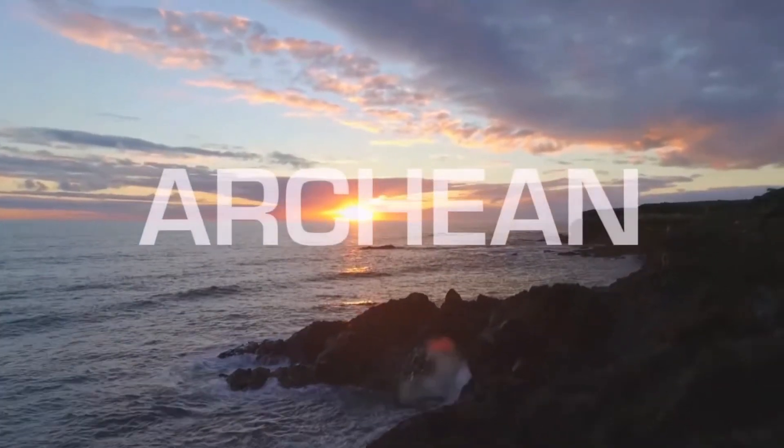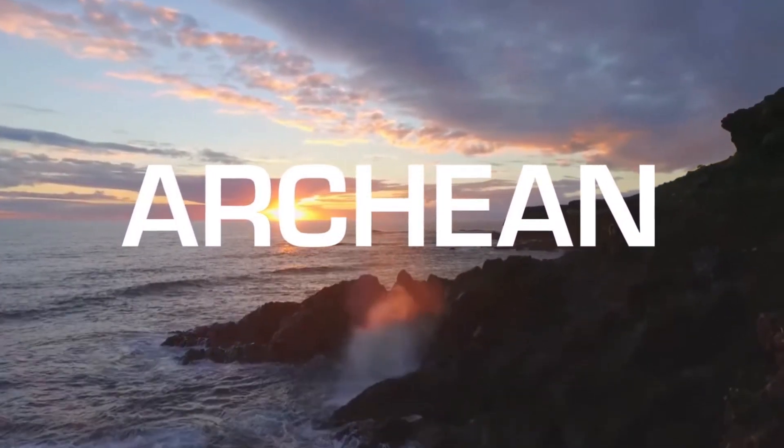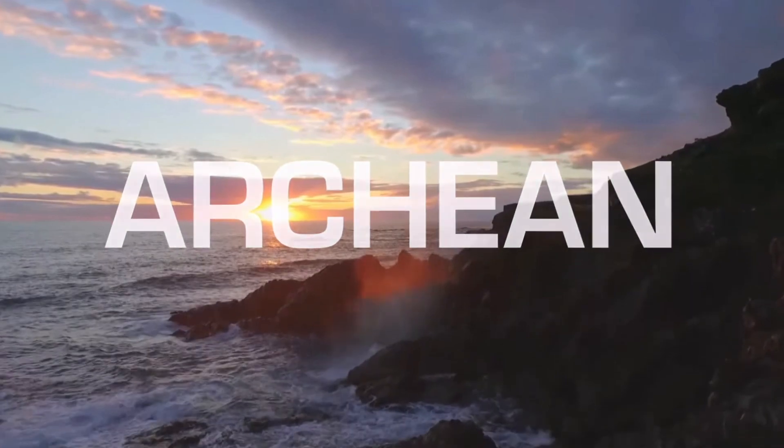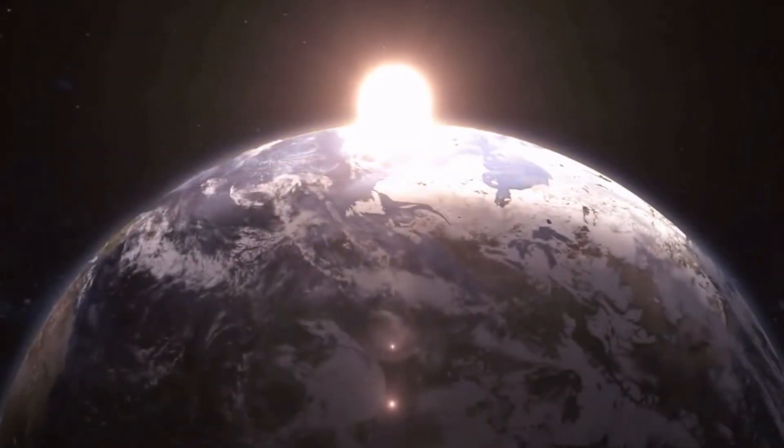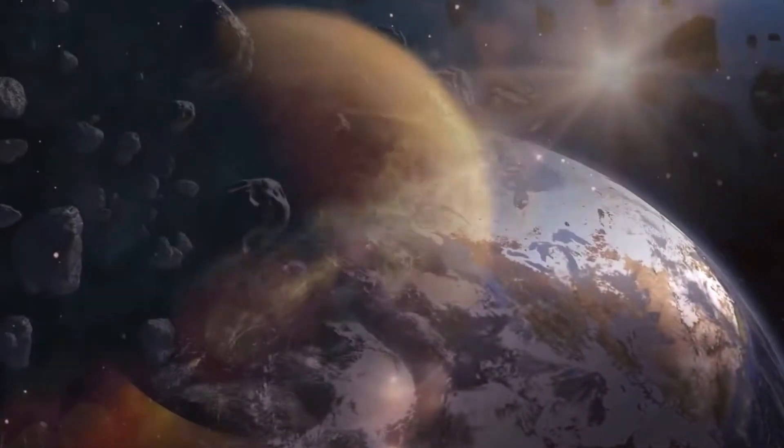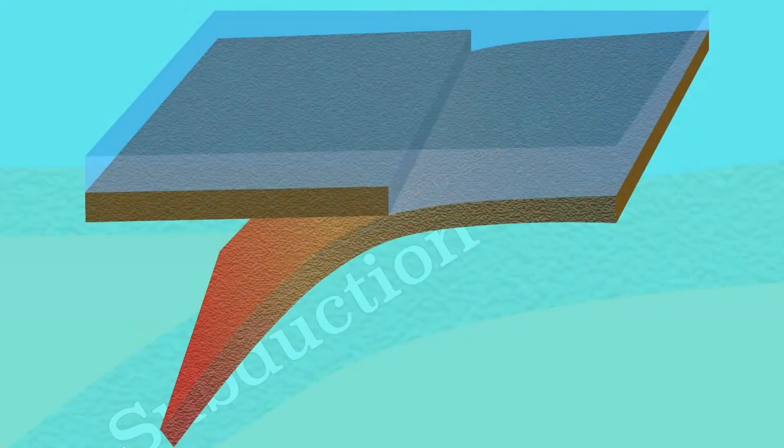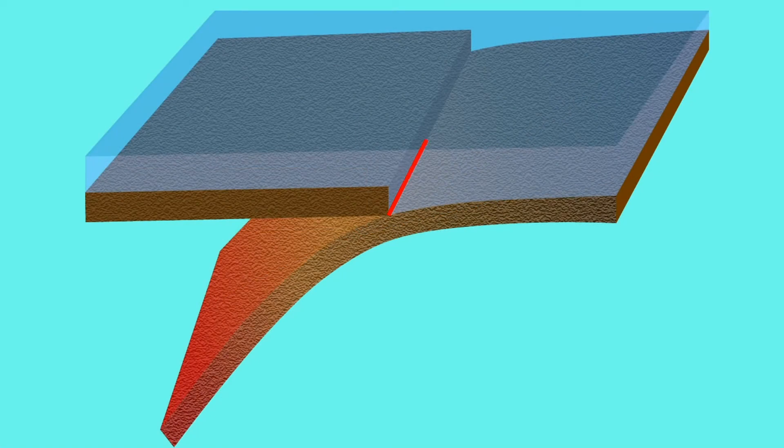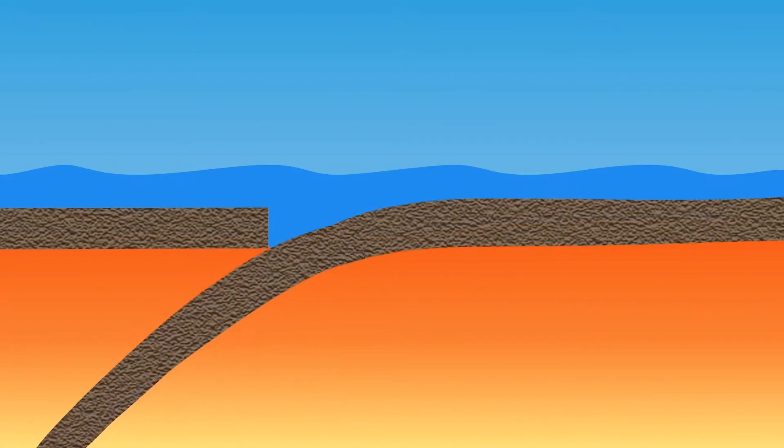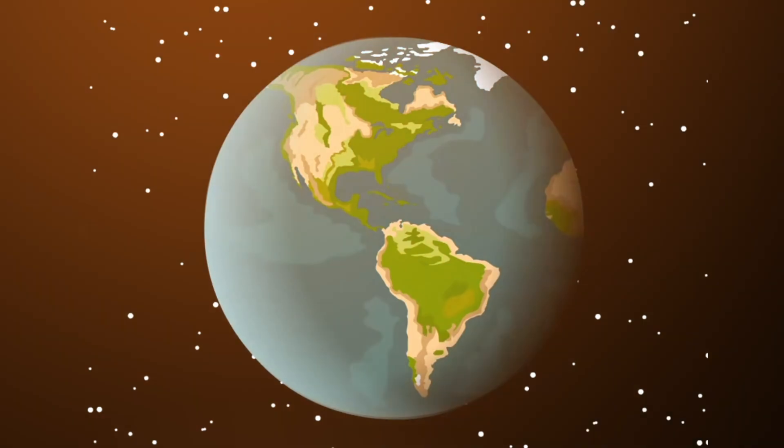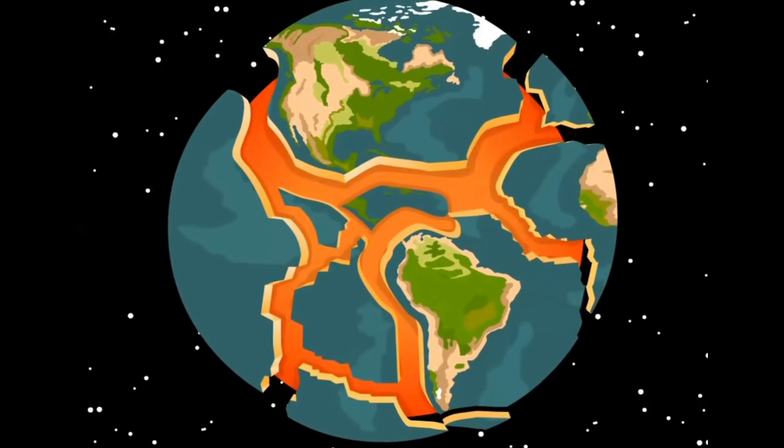However, the Archean rocks that did reach the Earth's surface are dispersed throughout the globe in regions like North America, Australia, Africa, and Eastern Europe. The age of some of these rocks exceed 3 billion years. Because of this, it was challenging for geologists to determine the beginning and characteristics of modern plate tectonics. They searched for evidence of subduction as a sign that plate tectonics began in the past because it is one of the main mechanisms by which it functions today.